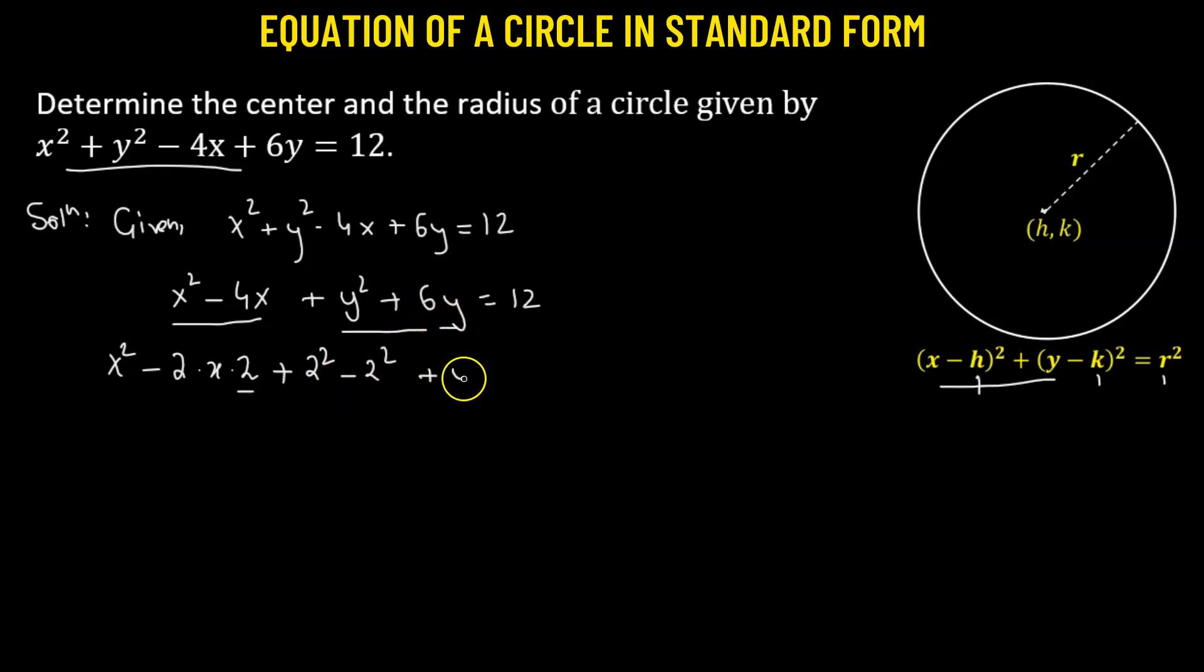Now coming to y squared plus 6y, we will have y squared. 6y can also be expressed as a multiple of 2 as 2 times y times 3. Now this number 3 is going to tell us that we add 3 squared to the expression and also subtract 3 squared from it. This will equal 12.